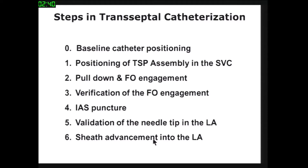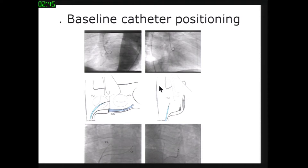For baseline catheter position, for most PMV procedures the catheter is referenced by the trans-aortic pigtail, which is located at the aortic area in both the AP and lateral views. The fossa ovalis is localized in relation to these landmark views.